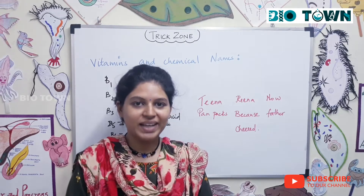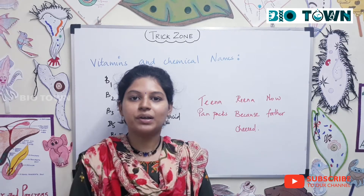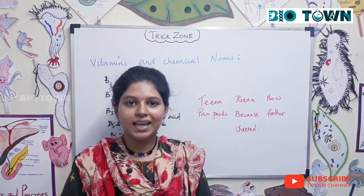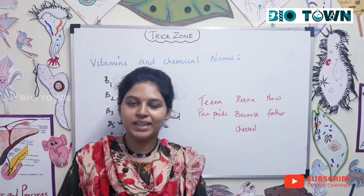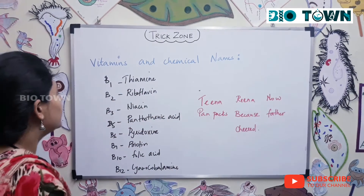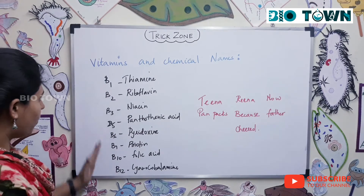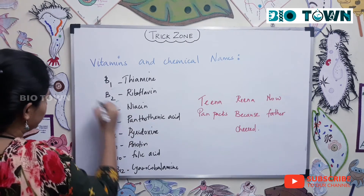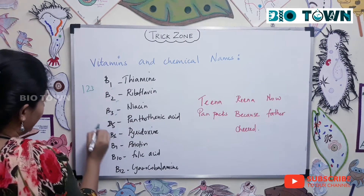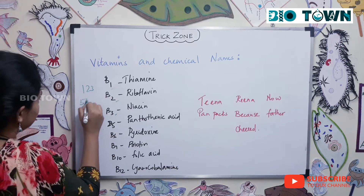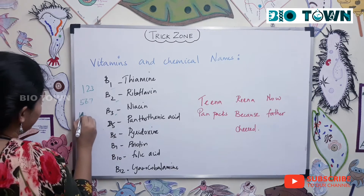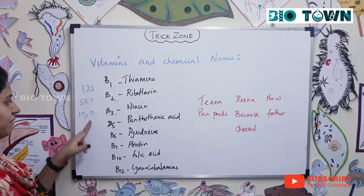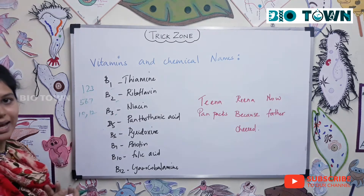Hello friends! In today's session we are going to learn an interesting topic: the names of vitamins along with their chemical names. First, let's memorize all the vitamins — B1, B2, B3, B5, B6, B7, B10, and B12.